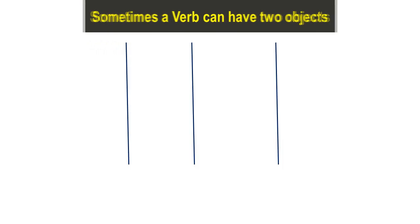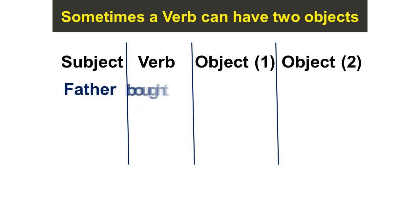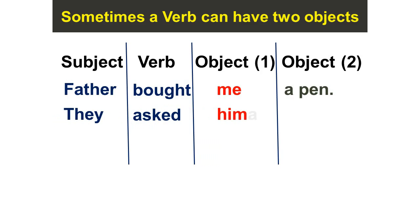Sometimes a verb can have two objects. Subject, verb, object 1, object 2. Father bought me a pen. They asked him a question.